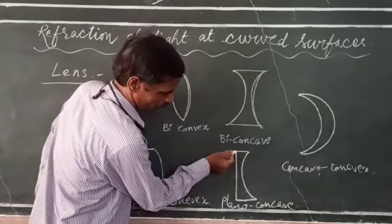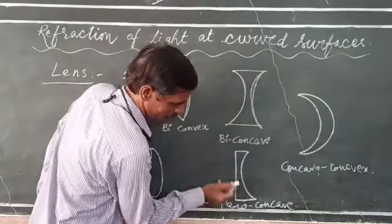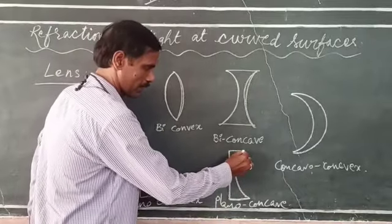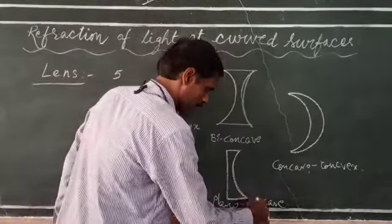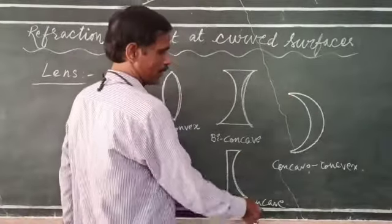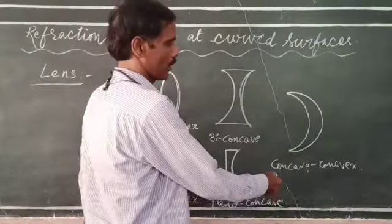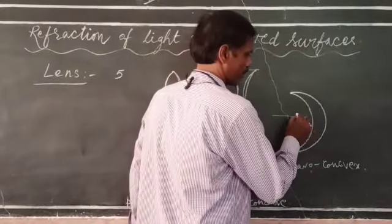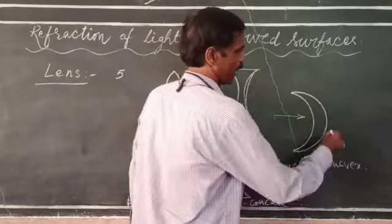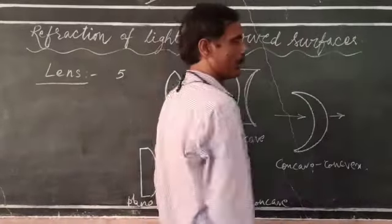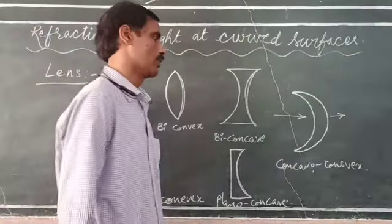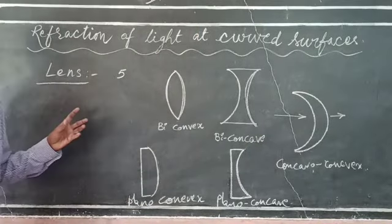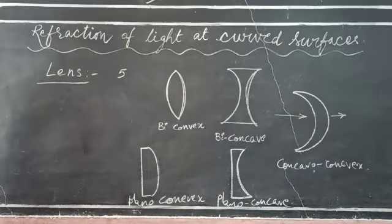Planoconcave, in which one of the surfaces is plane and the other surface is bulged inside. Concavoconvex, in which one of the surfaces is bulged in and one of the surfaces is bulged out. These are the types of lenses.